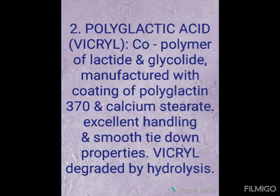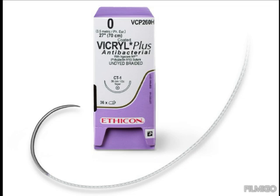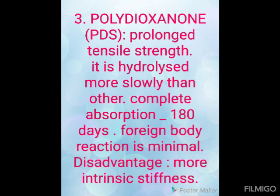Moving on to polyglactic acid, with the example being Vicryl. Introduced in 1974, this suture material is a co-polymer of lactide and glycolide, manufactured with a coating of polyglactin 370 and calcium stearate. It has excellent handling and smooth tie-down properties. Vicryl is degraded by hydrolysis — both Dexon and Vicryl are absorbed by hydrolysis. Vicryl is braided and comes in either a clear undyed or violet dyed form.